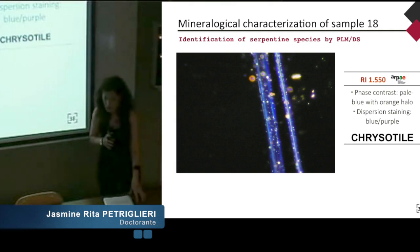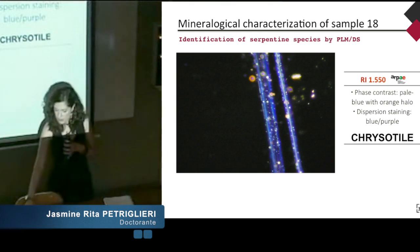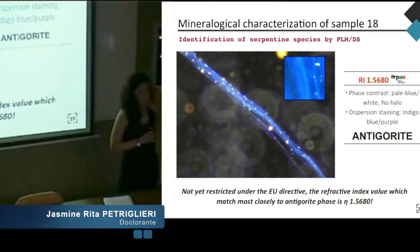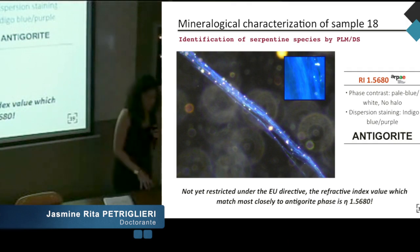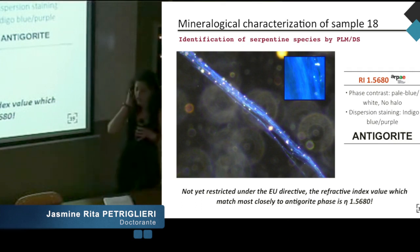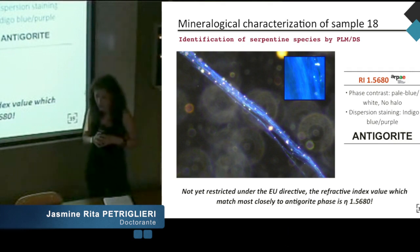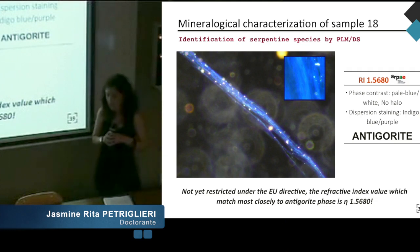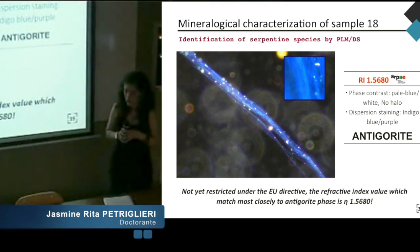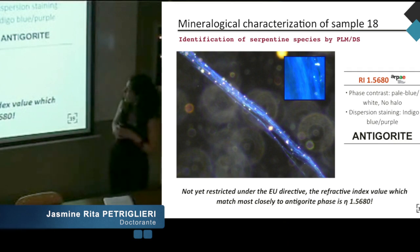For chrysotile, we use the standard refractive index at 1.550. But for antigorite, there is no refractive index recommended by regulation today, because antigorite is not considered as an asbestos outside New Caledonia. A great survey of different refractive index liquids was carried out, and the refractive index value that matched most closely the antigorite phase is 1.5680. We observe fibrous lamellae characterized by a phase contrast observation showing a pale blue to white color with no anomalous color. Observing the dispersion staining color in dark field, fibro-lamellae appear with a beautiful indigo blue color.